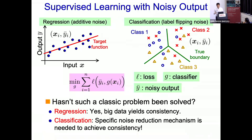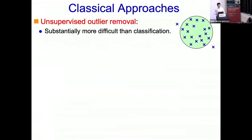This is a classic problem and many people have tried many different approaches. One of the most standard approaches is unsupervised outlier removal — given some clean points and noisy points, we try to get rid of noisy points by outlier removal techniques. This is fine if it works, but in practice outlier detection may be harder than the classification problem itself, so it's not that easy to do outlier removal in a reliable way.